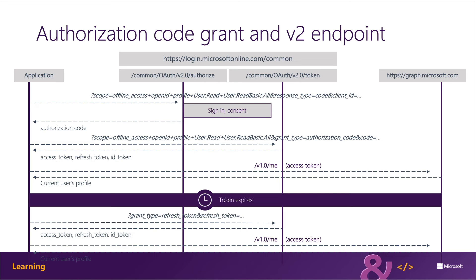Let's explore how the authorization code grant flow works to obtain the access token. This diagram provides an overview of the entire process, from the ASP.NET MVC application on the far left, through the two Microsoft Identity V2 endpoints for authorization and token acquisition, to Microsoft Graph on the far right. Once the access token is acquired, your application calls Microsoft Graph without repeating the acquisition steps. Instead, the web application caches the access token locally and keeps using it until it expires, at which point a refresh token is used to obtain a new access token without requiring the user to sign in again.